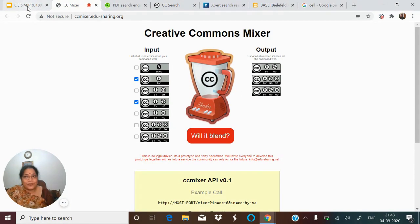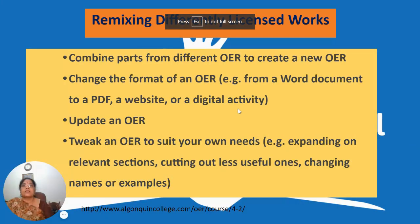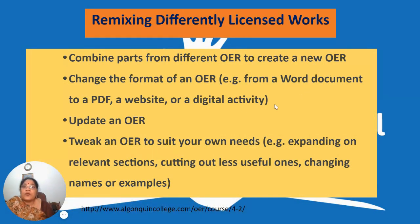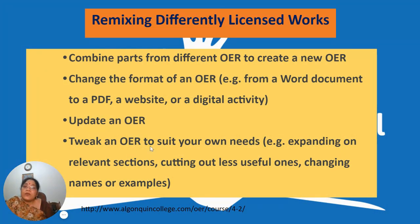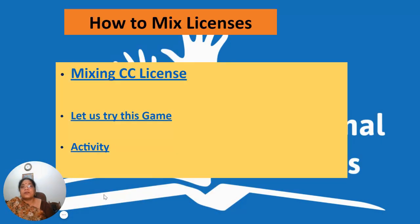This is one of the very interesting ways of seeing the compatibility when remixing resources with different licenses. When remixing, you combine parts from different OERs to create a new OER. You can change the format — from a Word document to a PDF, or a website to a digital activity. You can also update an OER, or tweak it to suit your own needs, such as expanding relevant sections, including new content, or deleting parts you don't need.